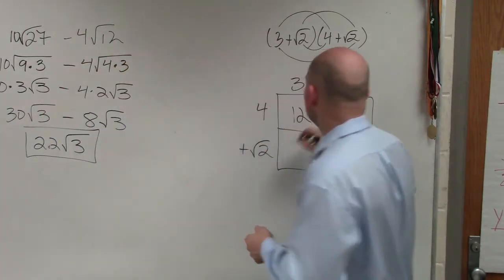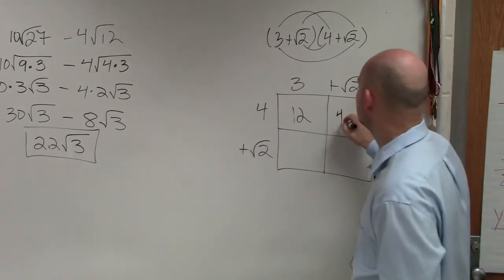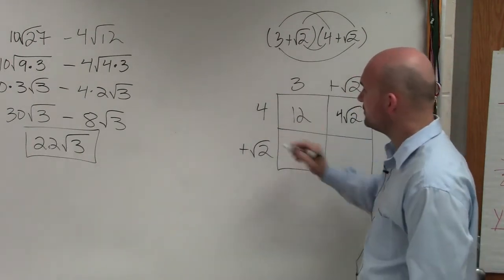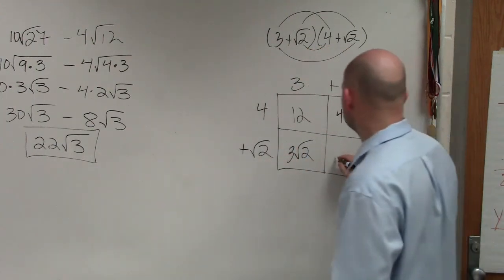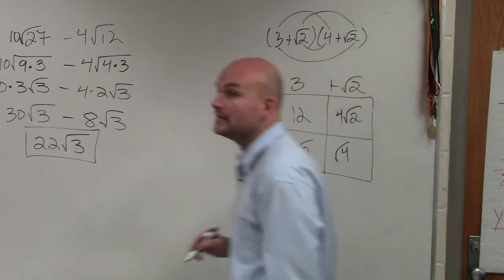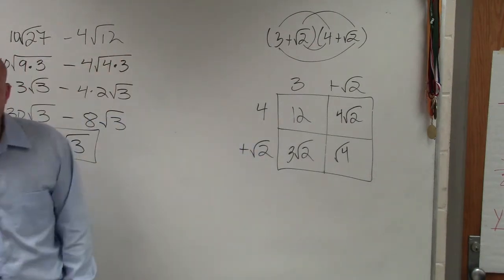So 4 times 3 is 12. 4 times square root of 2 is 4 square root of 2. 3 times square root of 2 is 3 square root of 2. And square root of 2 times square root of 2 is going to be the square root of 4. Now how do we know the square root of 4? 2.